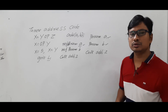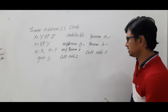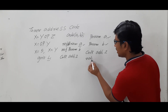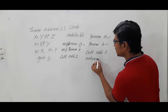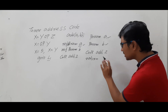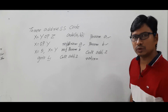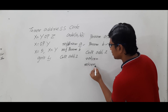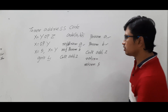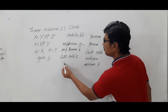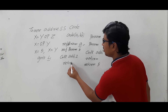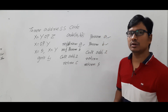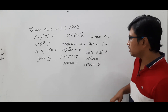For the return statement, you simply write return. If you don't want to return any value, just write return. If you want to return a constant, write return 5. If you want to return the value of an operand, write return c. These are the three address code forms for functions.